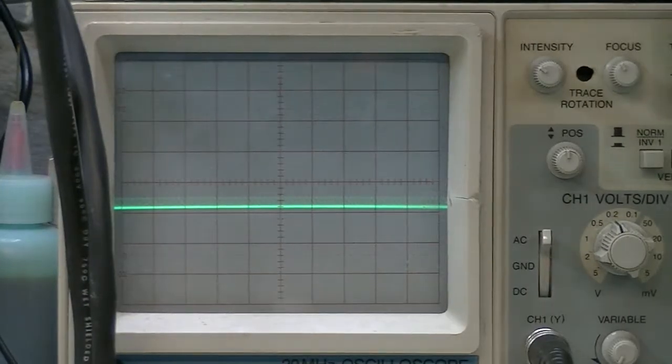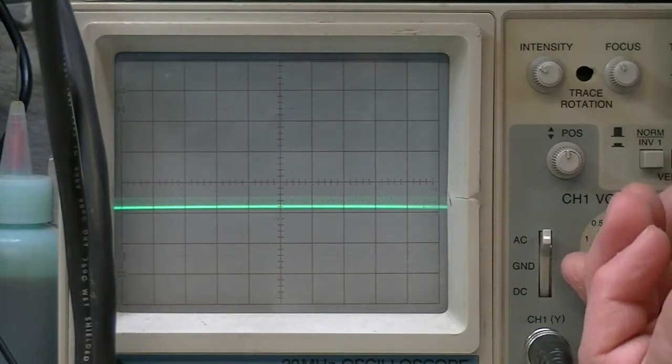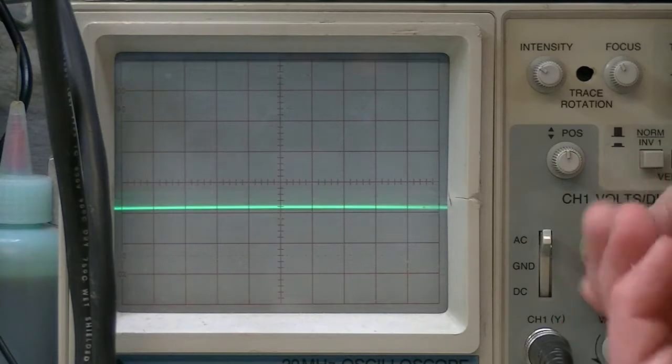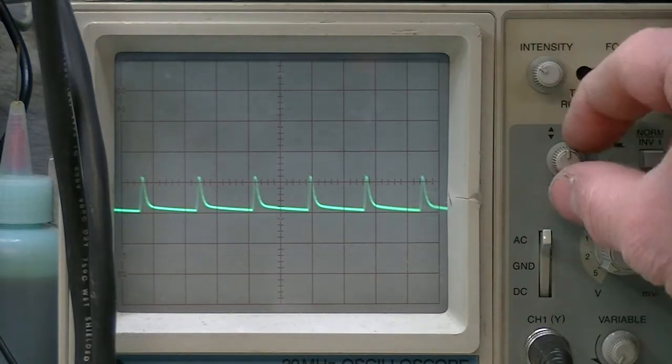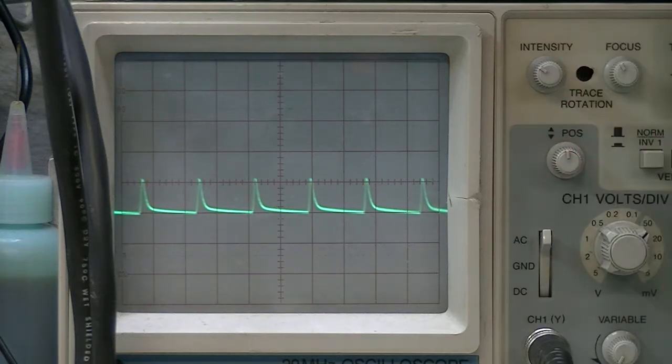But it can still improve. I was at 200 millivolts per division. Now at 50 millivolts per division, it shows approximately 50 millivolts.